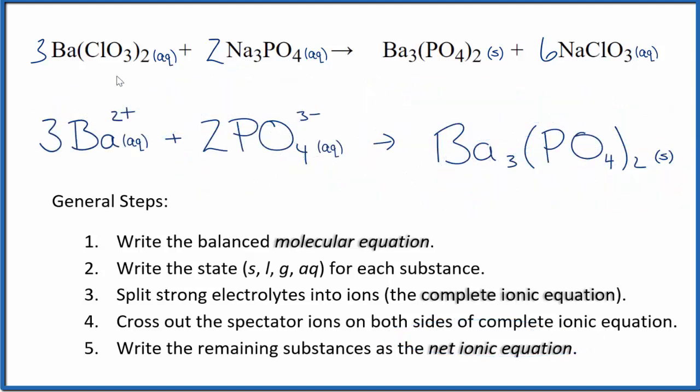So this is the balanced net ionic equation for barium chlorate and sodium phosphate. You'll note charge is conserved. We have three times two plus. That's six plus. Two times three minus. That's six minus. So this all adds up to zero over here. Neutral, net charge of zero. Charge is conserved. And if you count the atoms up, they're balanced as well.